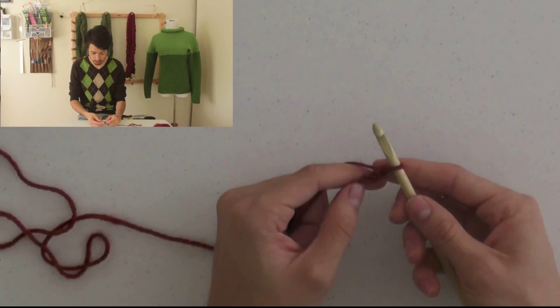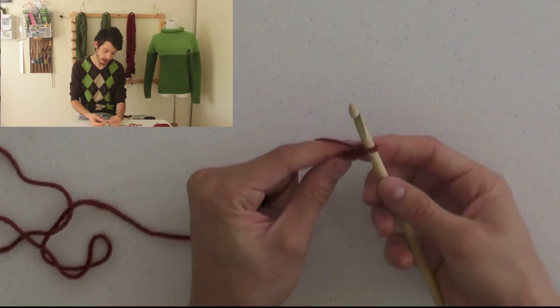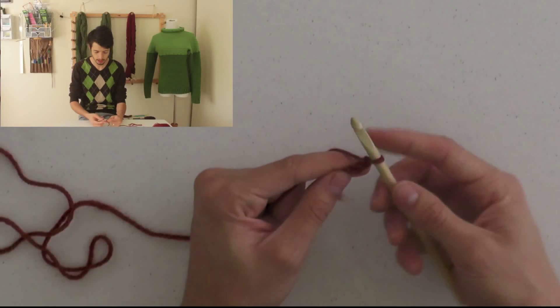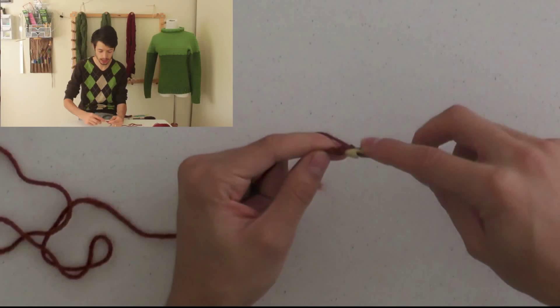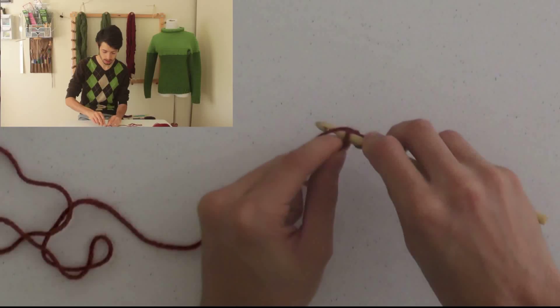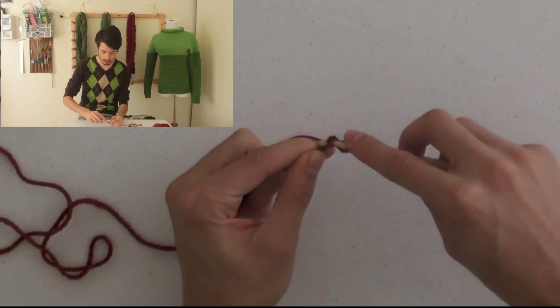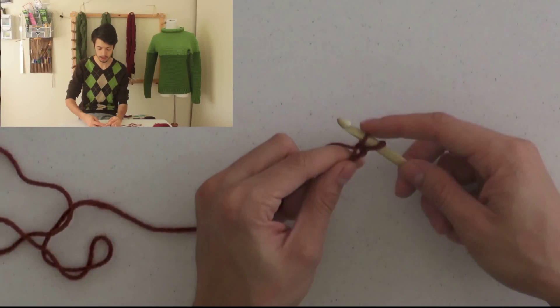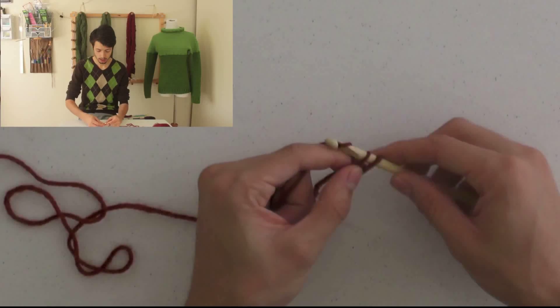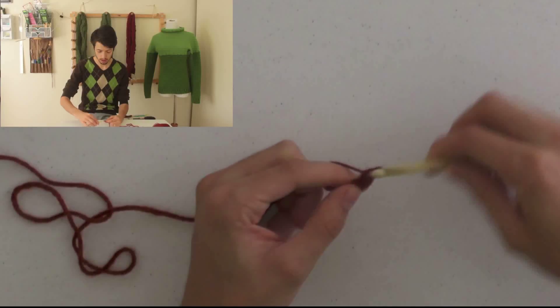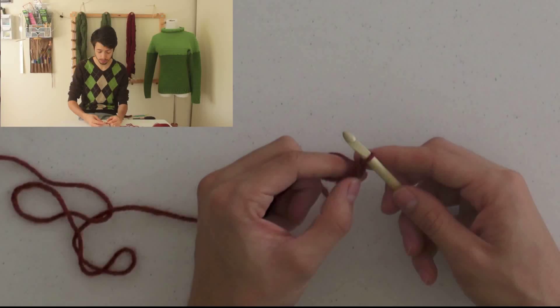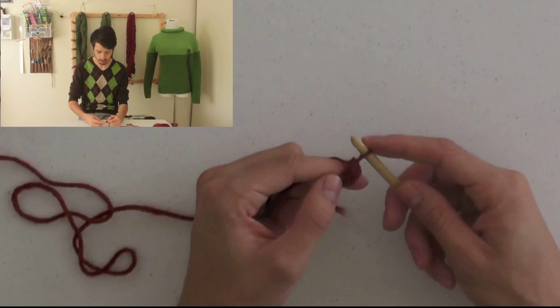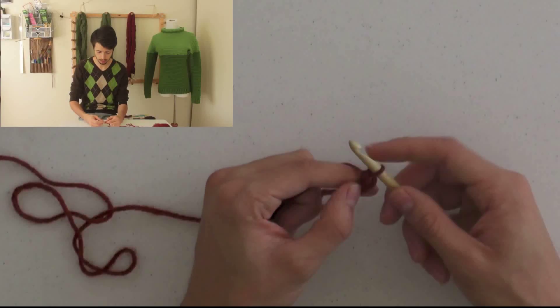To start, you're going to chain two. So, I have one, two, and then there's a third stitch on my hook. I'm going to insert my hook in that first chain that I made. I'm going to yarn over, pull through a loop. So, I now have two loops on my crochet hook. Yarn over, and pull another loop through. So, this gives me one single crochet on my foundation chain, or foundation row.